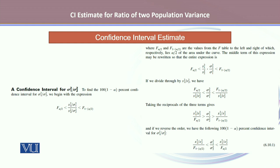Solving it gives an expression for the ratio of two variances in equation 6.10.1, which is S1 square over S2 square divided by F 1 minus alpha by 2 as a lower confidence limit, and S1 square divided by S2 square divided by F alpha by 2 as upper confidence limit.